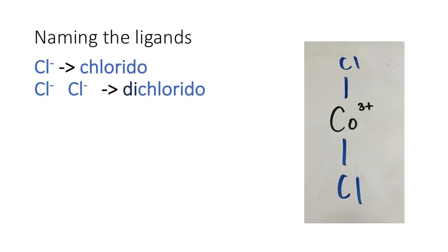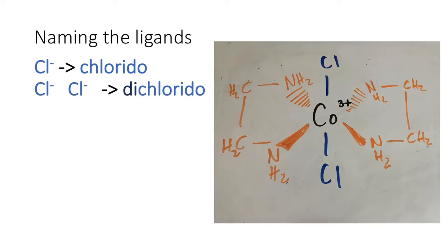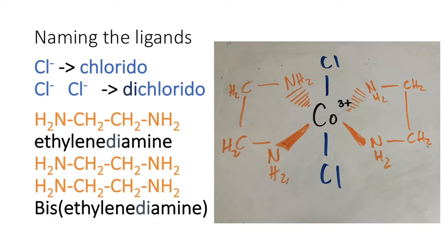We start by naming the ligands. Two of the ligands are chlorides making it dichlorido. The other ligands include a chain of an ethyl group with an amine. Since it's two amines it would be ethylenediamine, and whenever there's two chains of those we would name it bis, meaning 2, so it would be bis(ethylenediamine).